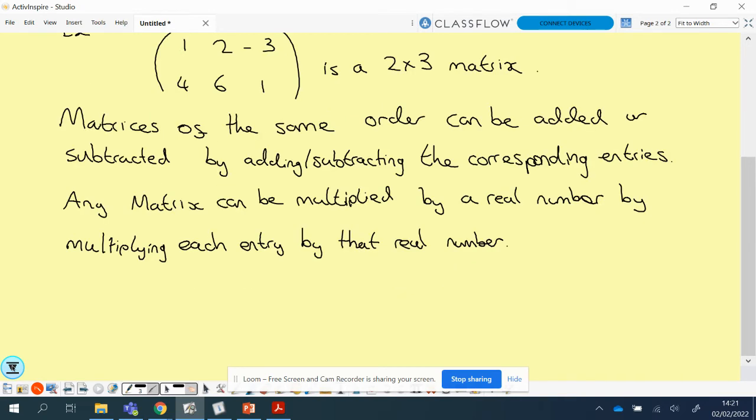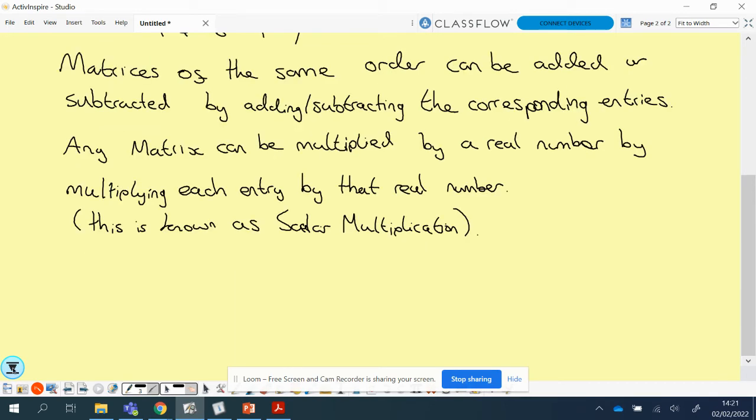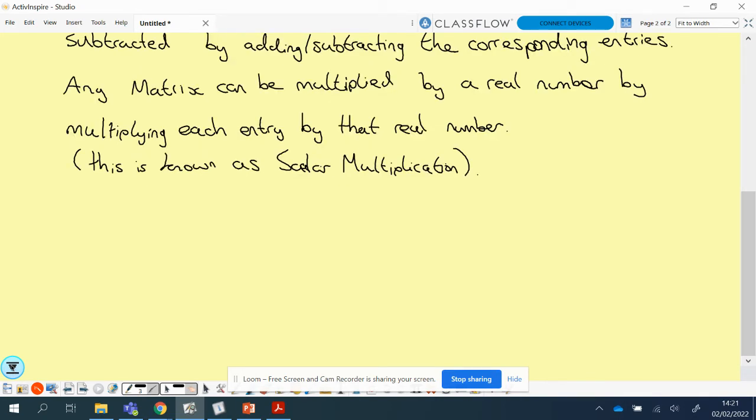What this is known as, this last one about the multiplying, this is known as scalar multiplication. There is such a thing as matrix multiplication, which we're going to look at in the next video, but that is a different thing. Scalar multiplication is when you multiply it just by a real number. You're scaling it up, basically. Let's look at a couple examples.